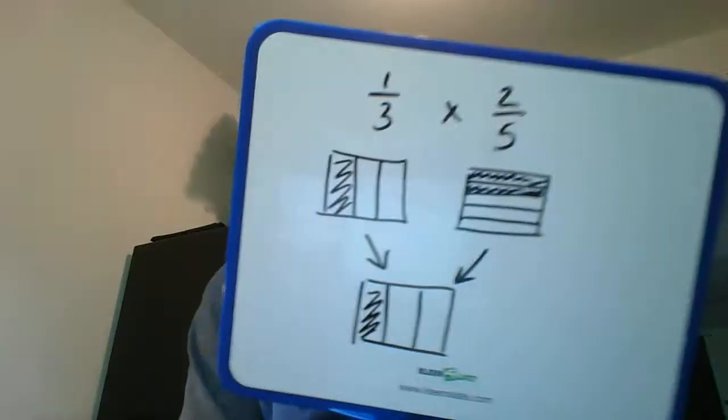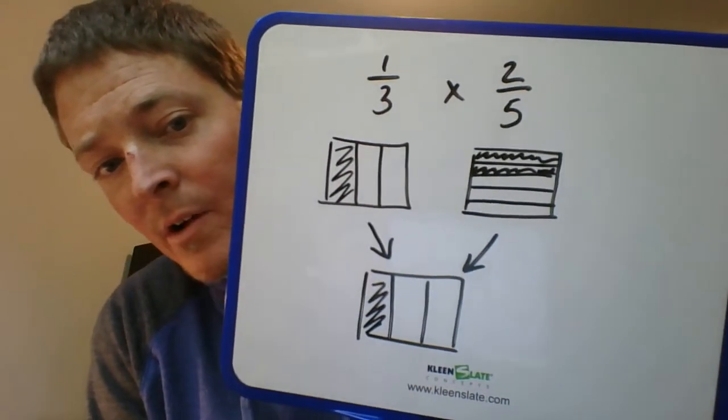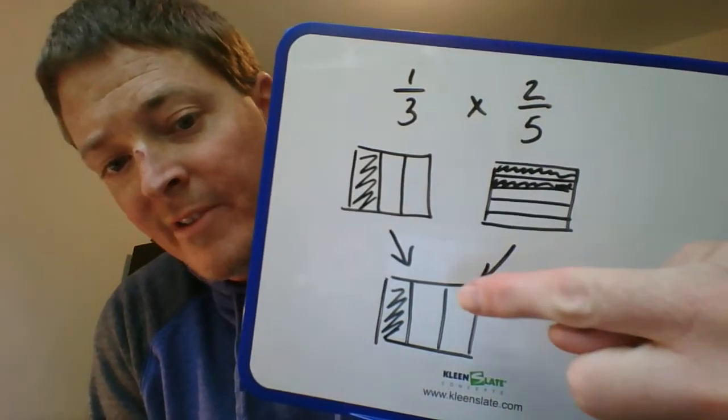All right, so I'm going to start off by putting my one-third in there like that. And now over here, I'm going to take my two-fifths and I'm going to draw five rows going that way. All right, here we go: one, two, three, four, five, like that.